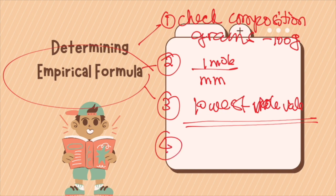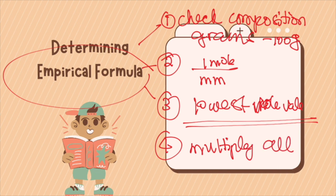After dividing, if all values are not whole numbers, you must multiply them all by a number that would make them whole. For example, if you have 0.5, multiply by 2. If you have 0.333, multiply by 3 to make it whole. Then use these whole numbers as your subscripts.